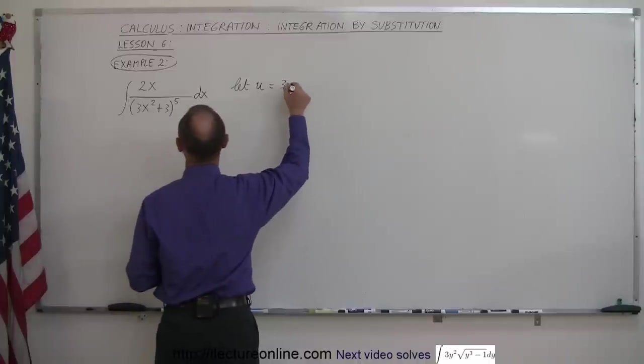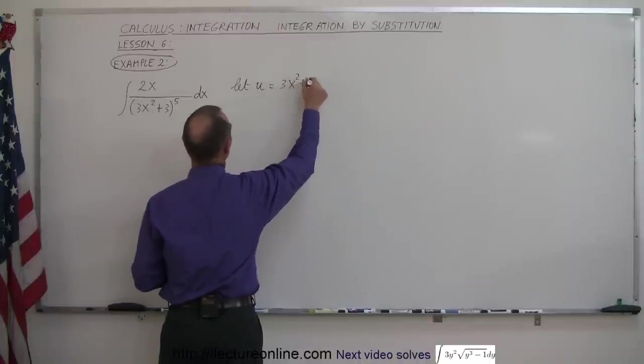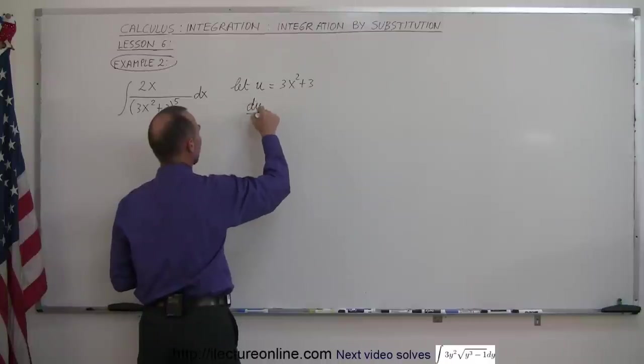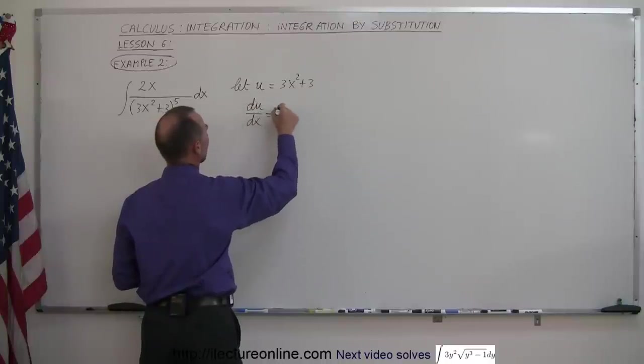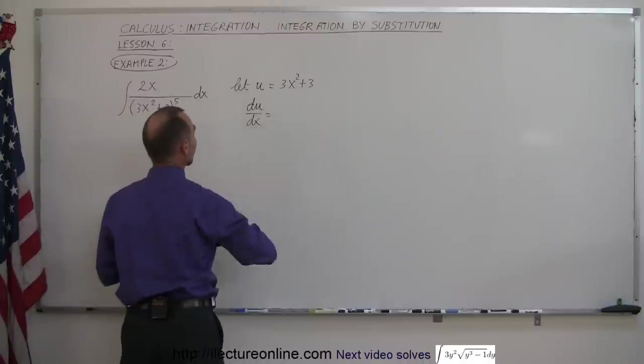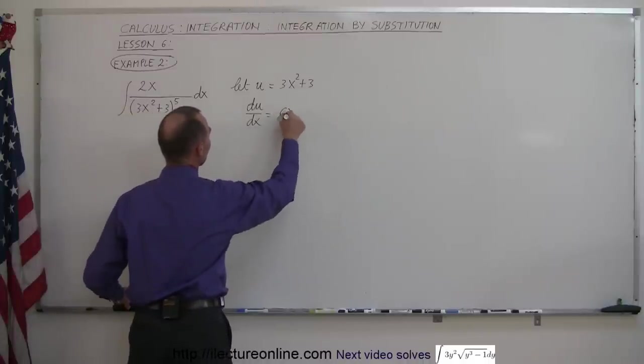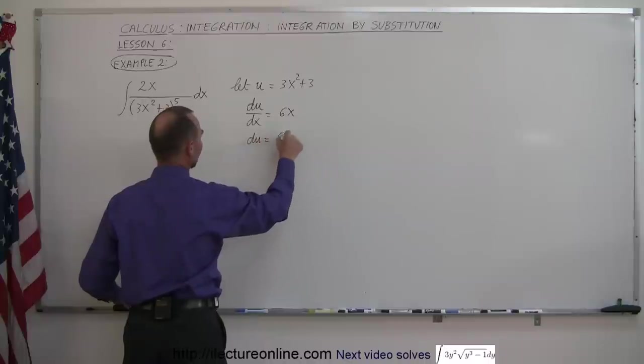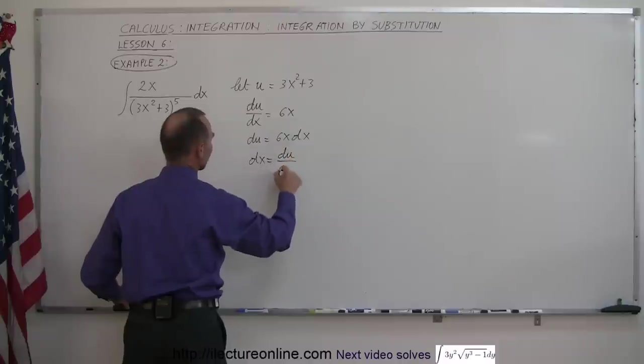So we write 3x squared plus 3 and then we take the derivative with respect to x. So du/dx is equal to... oh no, not 3x because we multiply the exponent times 3. So this gives me 6x. So du is equal to 6x dx and then we solve that for dx. So dx is equal to du over 6x.